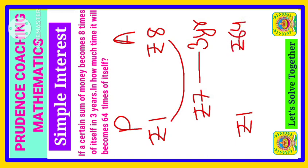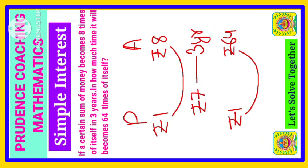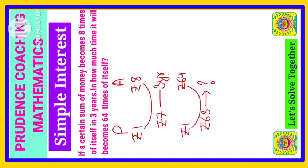Now the gap, that is simple interest, will be 64 minus one, that is rupees 63. You are asked this 63 will become in how many years. Now let's see how we can find out.